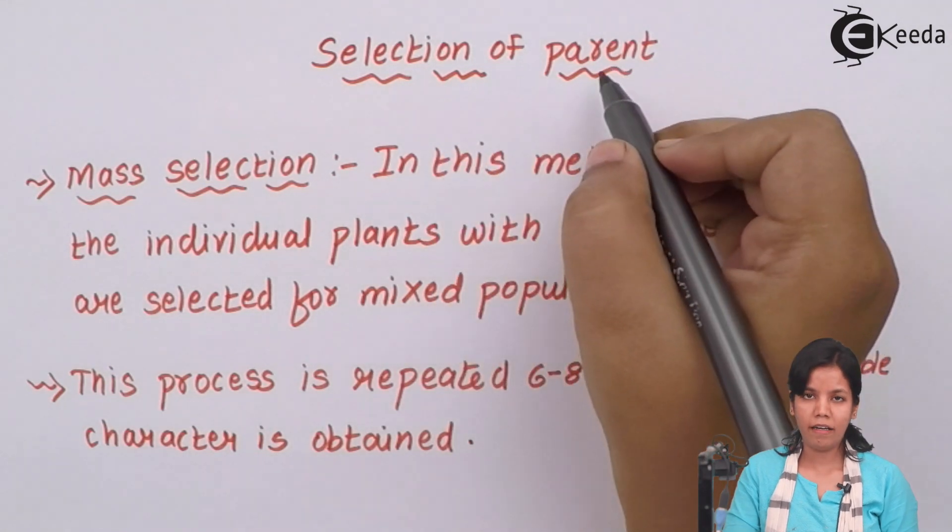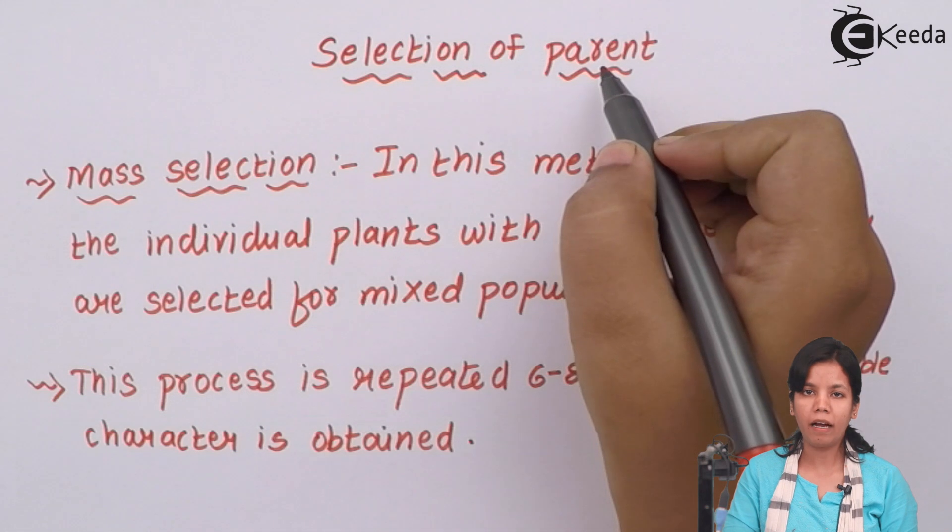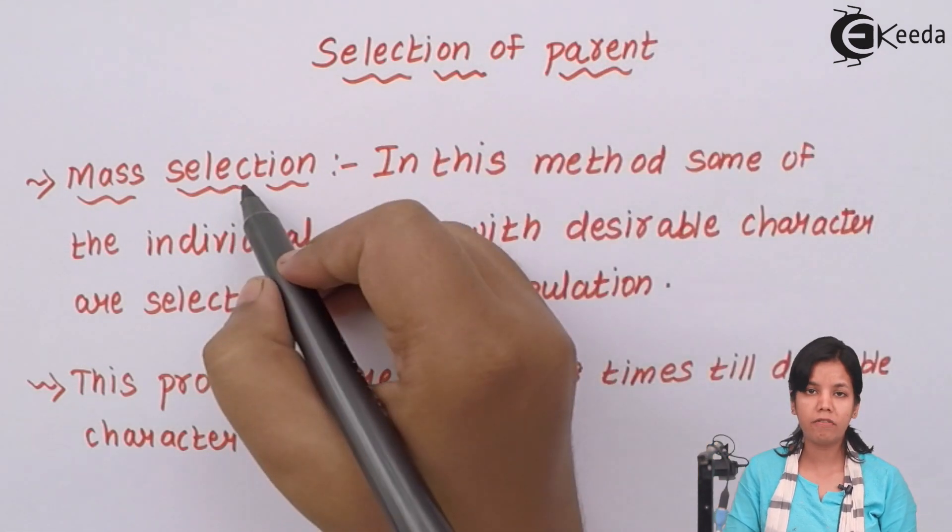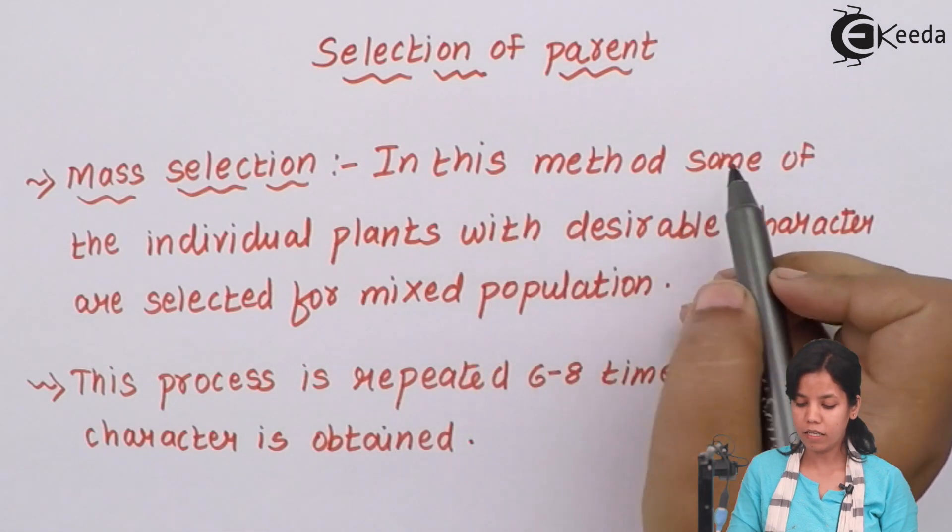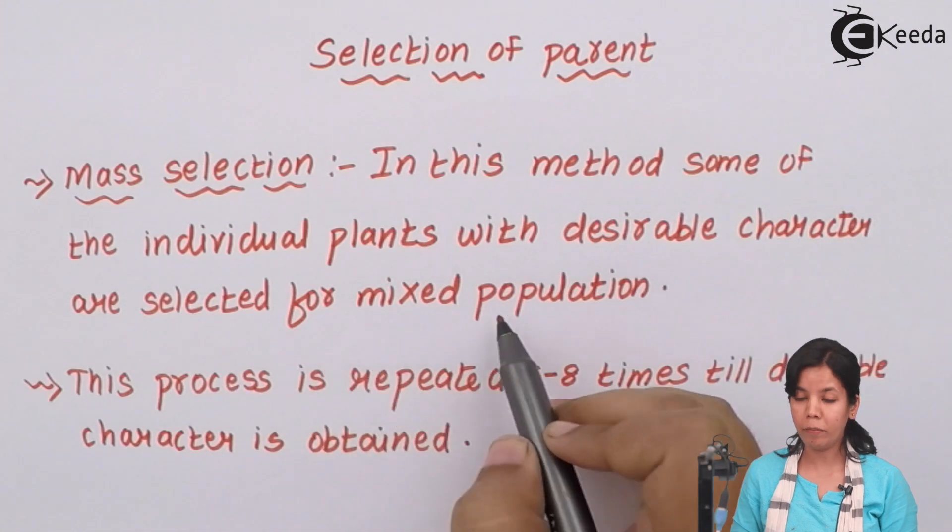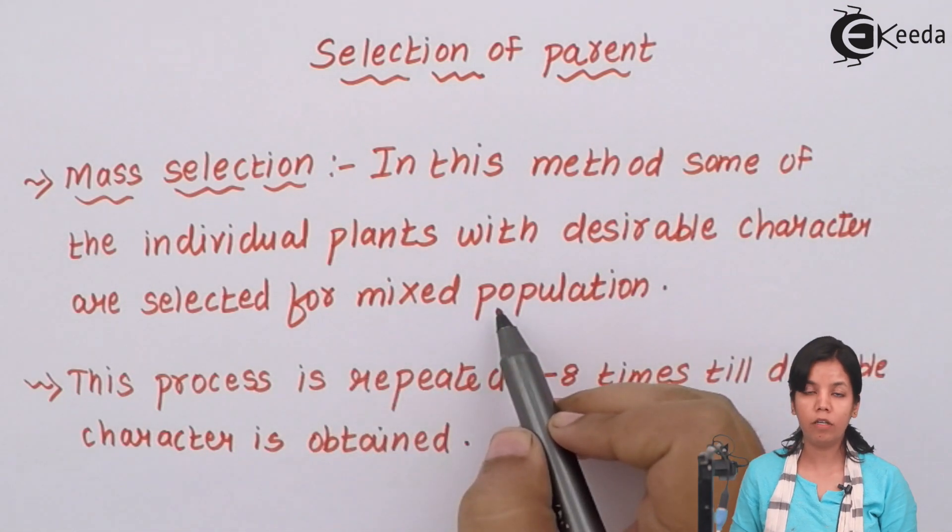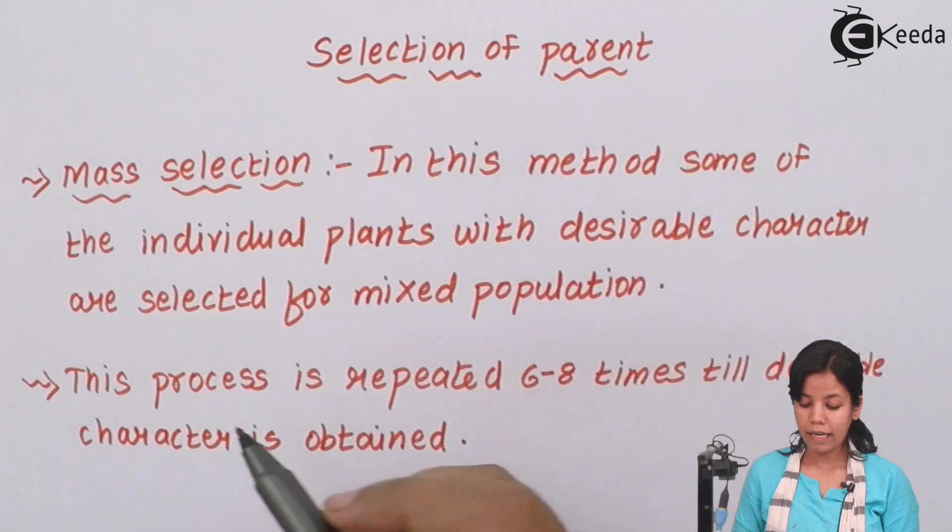Selection of parent for plant breeding. The first type of selection is mass selection. In this method, some of the individual plants with desirable characters are selected from mixed population. For example, you choose different varieties of crops and from those different varieties of crop you select a particular trait.